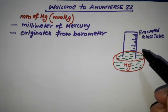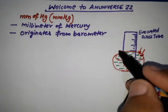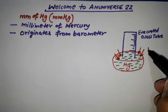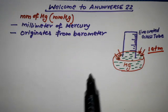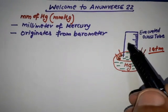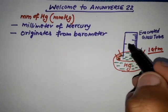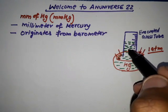On the surface of this mercury, atmospheric pressure is acting. When one ATM, one unit of atmospheric pressure, acts on this mercury, then the level of mercury rises up in the evacuated glass tube.